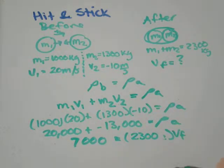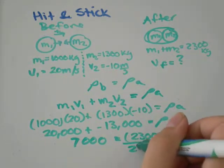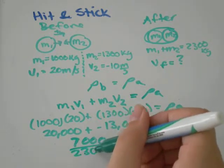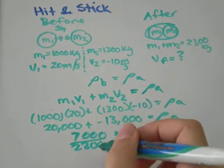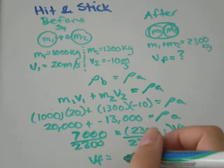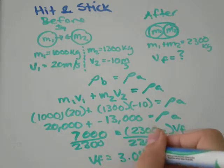So to solve for the final velocity, all I need to do is divide by 2300. And when I do that, I get Vf equals 7000 divided by 2300, so it would be about 3.04.